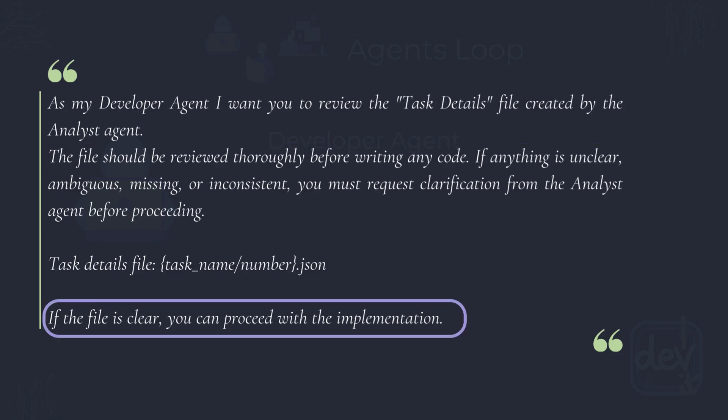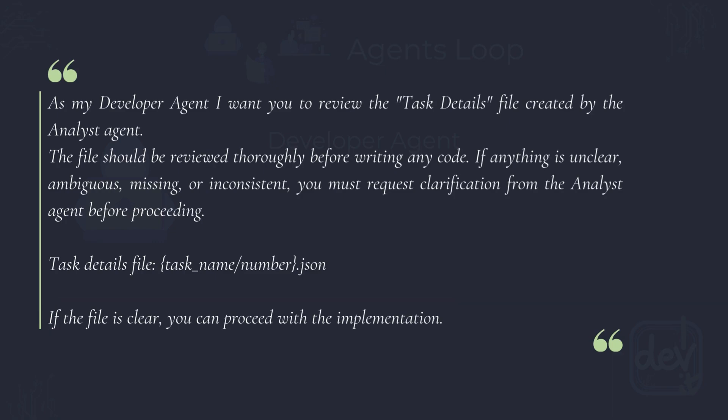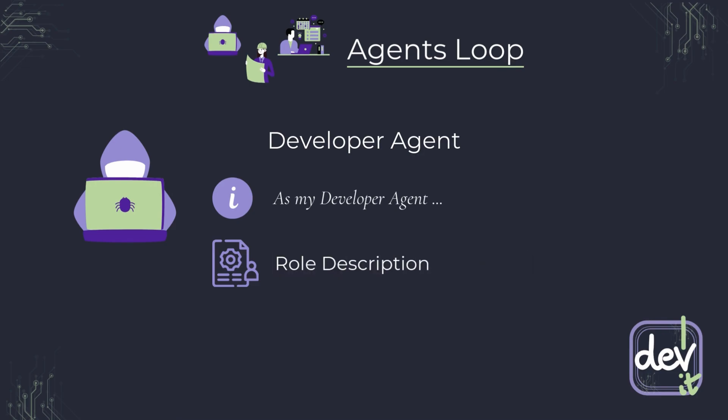Once the developer has a clear, complete task details file, it implements the changes exactly as specified. The developer agent's role has key rules: first, follow instructions precisely — we don't want any unrequested changes; second, don't make assumptions — if something is unclear, ask the analyst to clarify; and finally, focus on execution — implement the code, don't make design choices. The developer agent, like the analyst, has access to the entire codebase, but per its role instructions, it only accesses the files being changed — this saves context length and protects us from out-of-token errors.